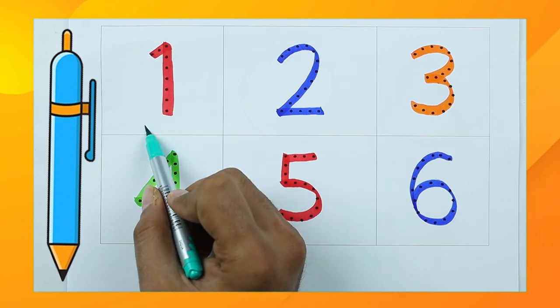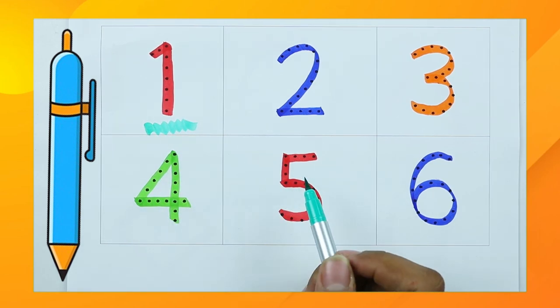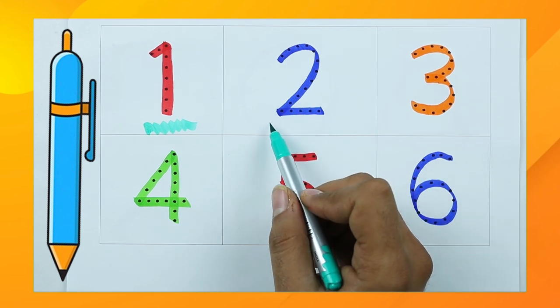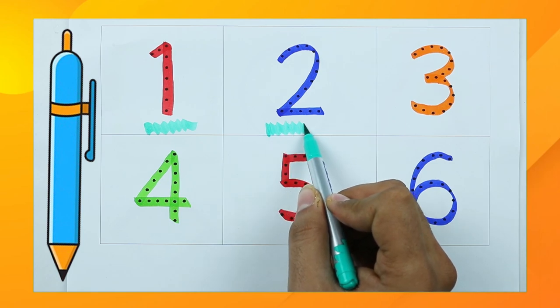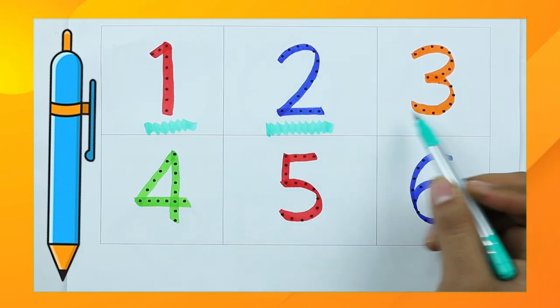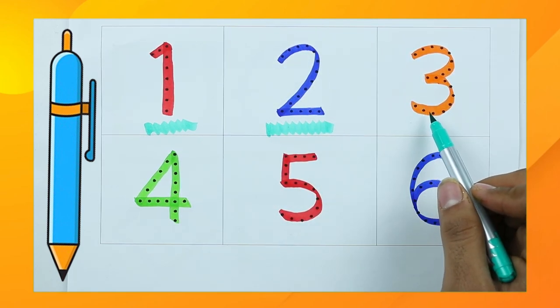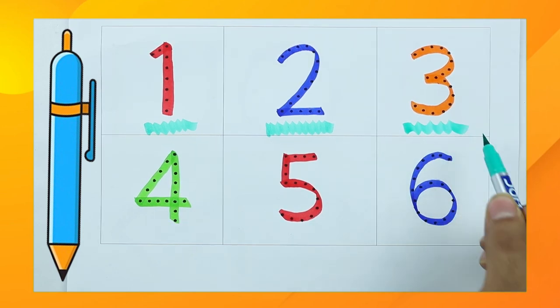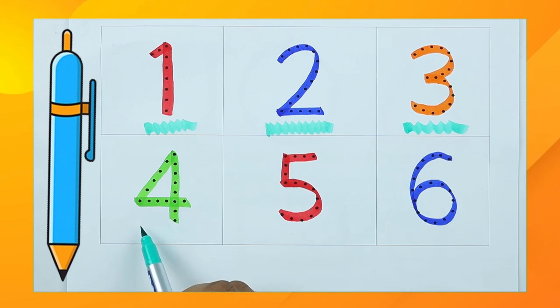It's number one. Which color is this? Yes, right, it's blue color number two. Which color is this? Orange, right, it's number three. Which color? It's green number four.